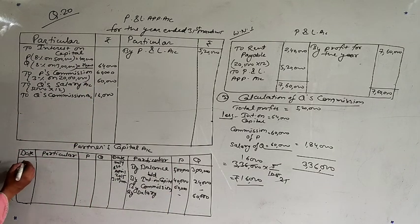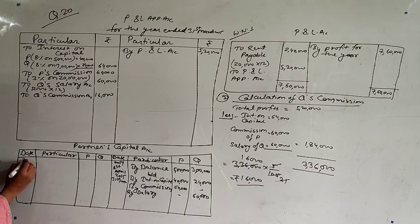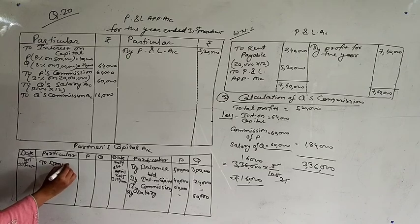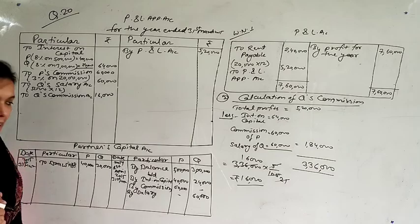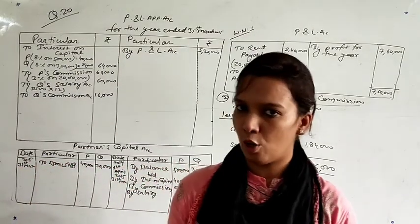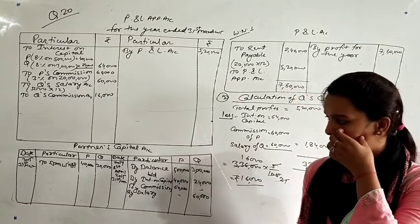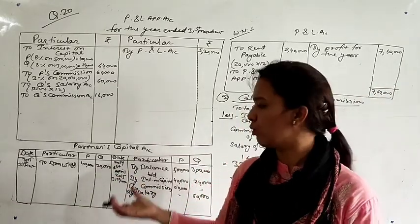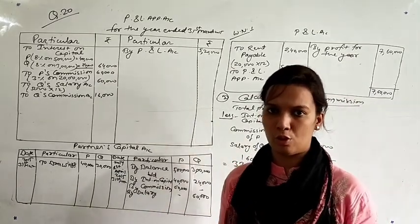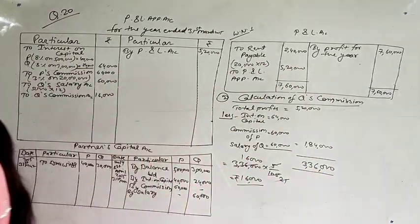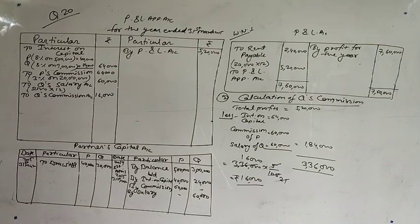Regarding rent payable — it has already been shown in the P&L account, so there is no effect on the P&L appropriation account or partners' capital accounts. For drawings: there is no date given, so we assume them at closing date 31st March. Drawings are 40,000 for P and 30,000 for Q. Since no rate of interest on drawings is given, we will not charge interest on drawings. Turnover has already been accounted for.